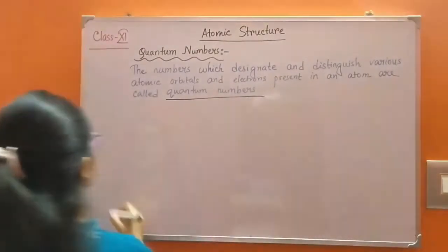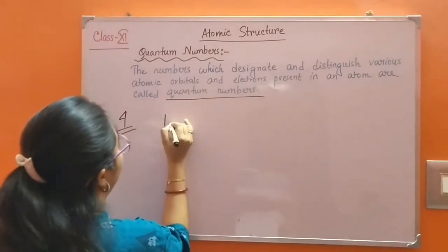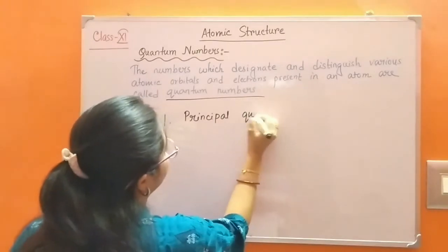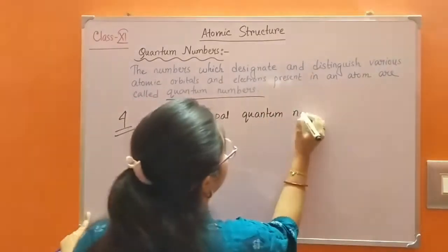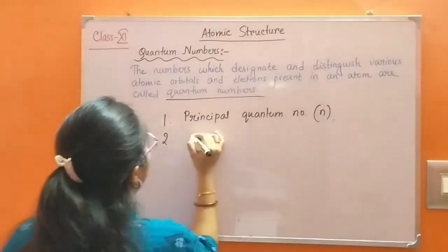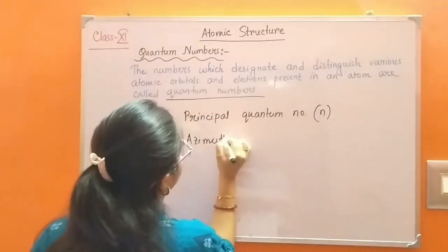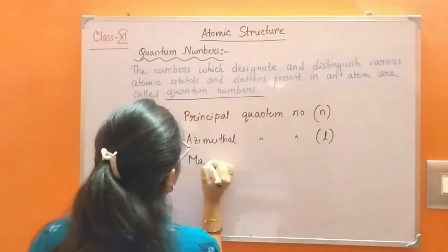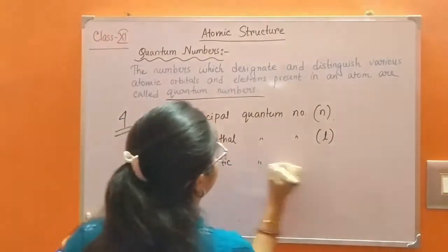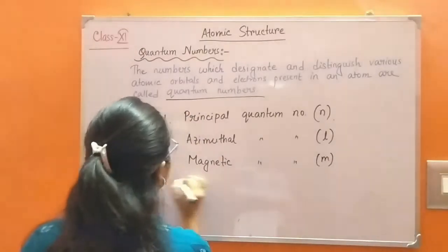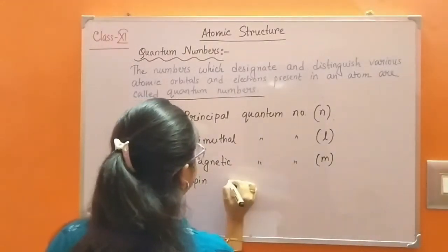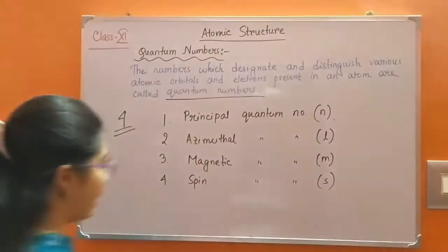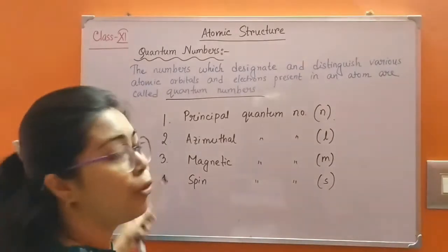There are four quantum numbers: one, principal quantum number; two, azimuthal quantum number, L; three, magnetic quantum number, M; and four, spin quantum number. Now we will discuss about these four quantum numbers.